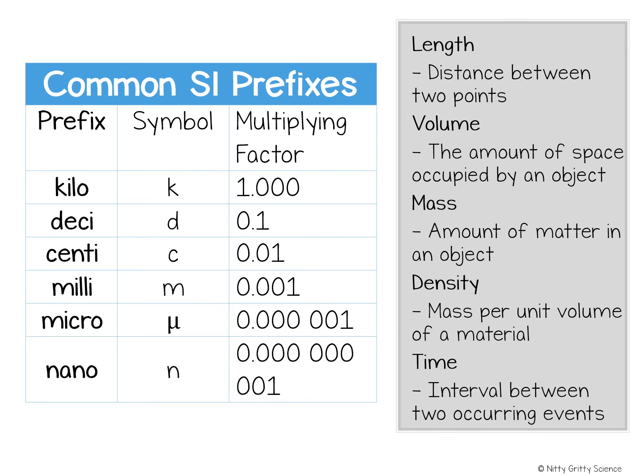In an experiment, it is often necessary to keep track of how long it takes for something to happen. For this you would use time, which is an interval between two events. The SI unit for time is the second. In an experiment, you will generally use a stopwatch or a timer with a second hand to measure time.